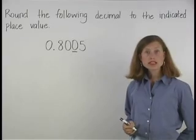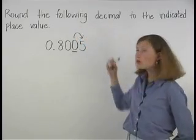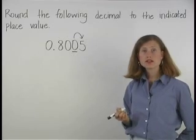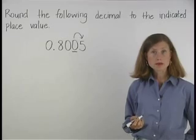Next, find the digit to the right of the rounding place, which in this case is 5. Since 5 is greater than or equal to 5, we round up.